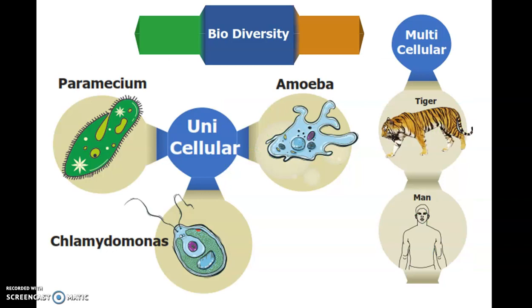Biodiversity can be segregated into two main things: unicellular and multicellular. Unicellular examples include paramecium, amoeba, and chlamydomonas.